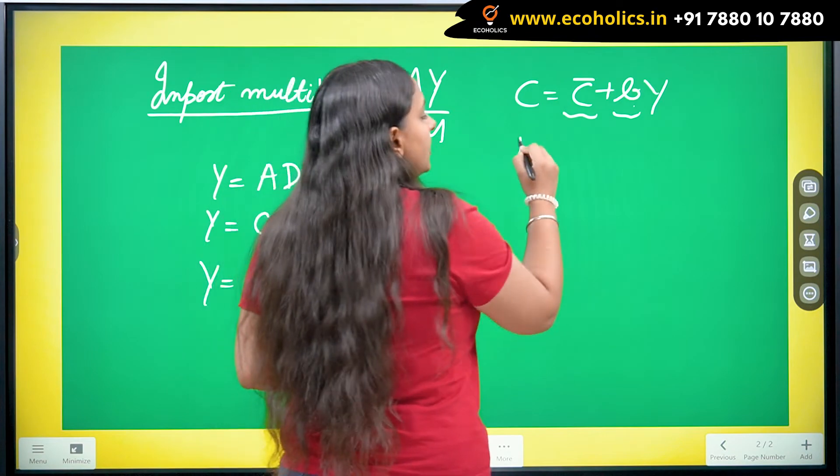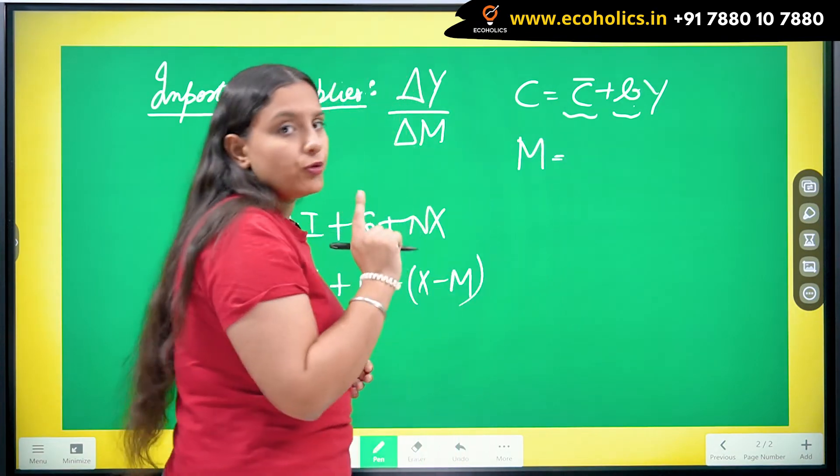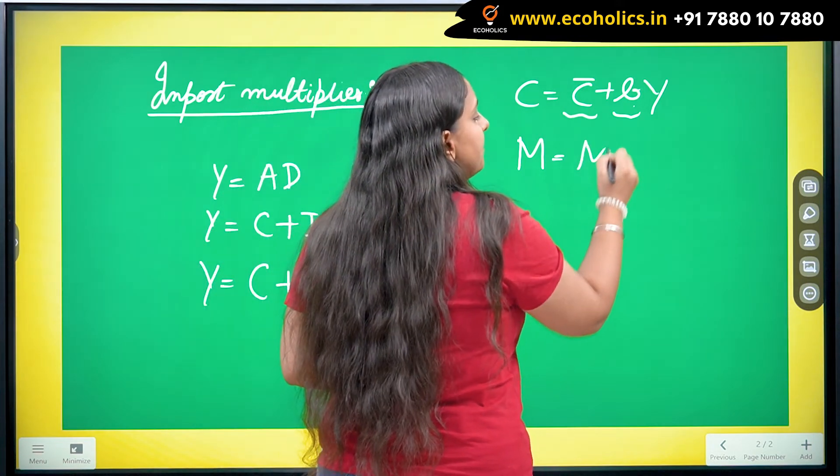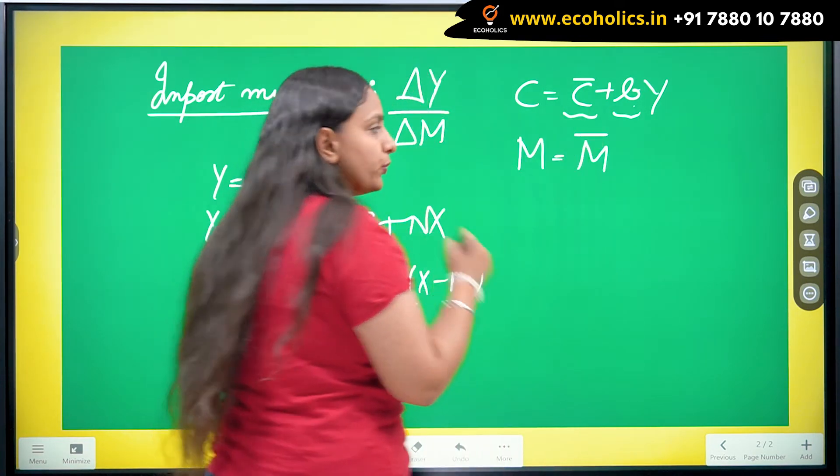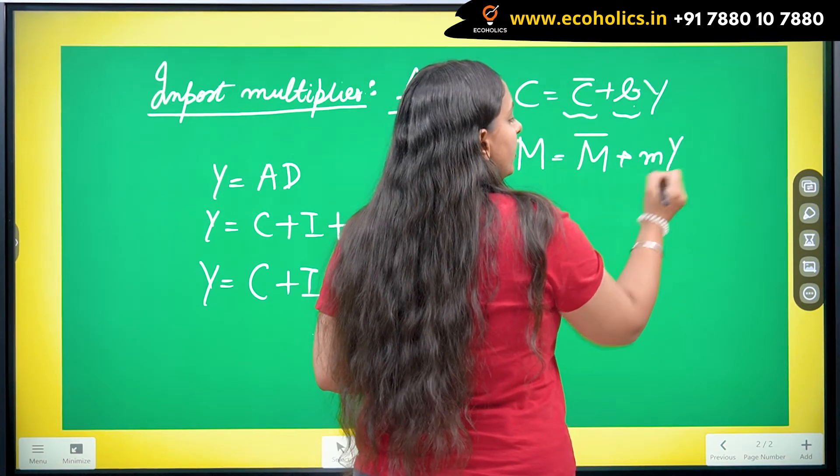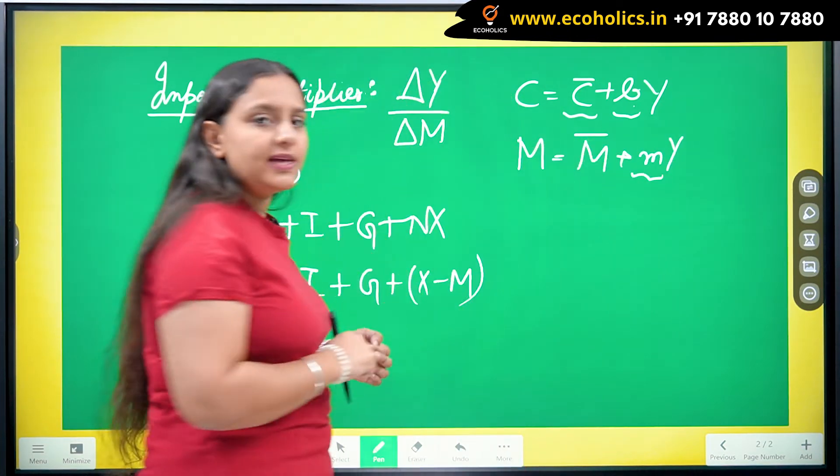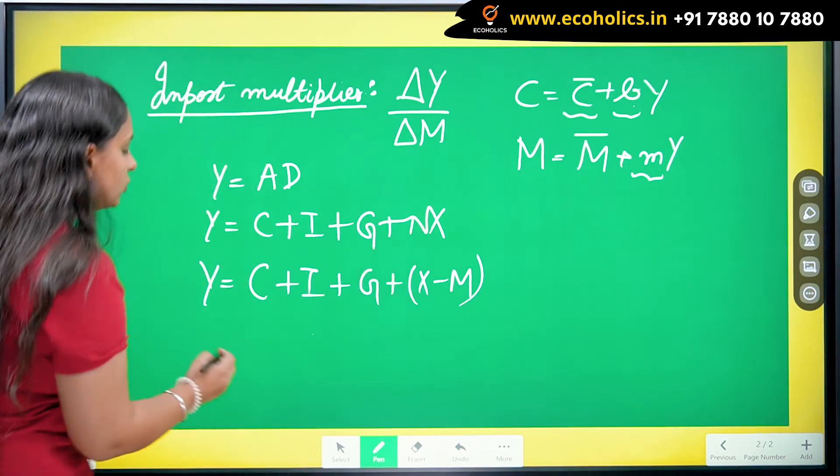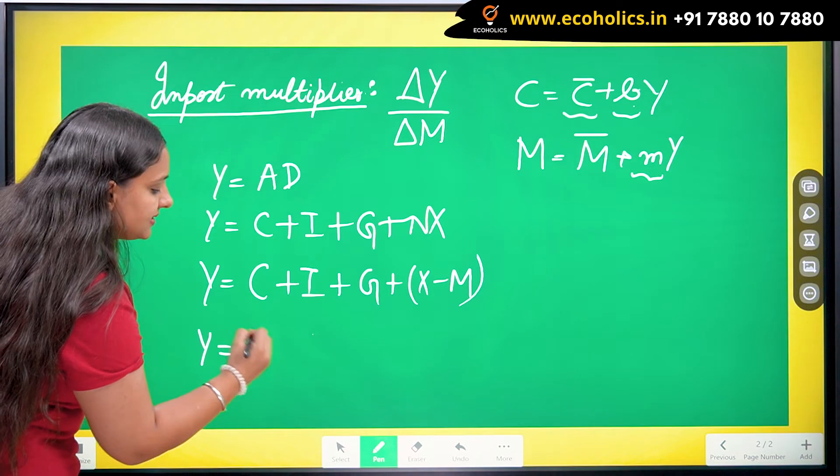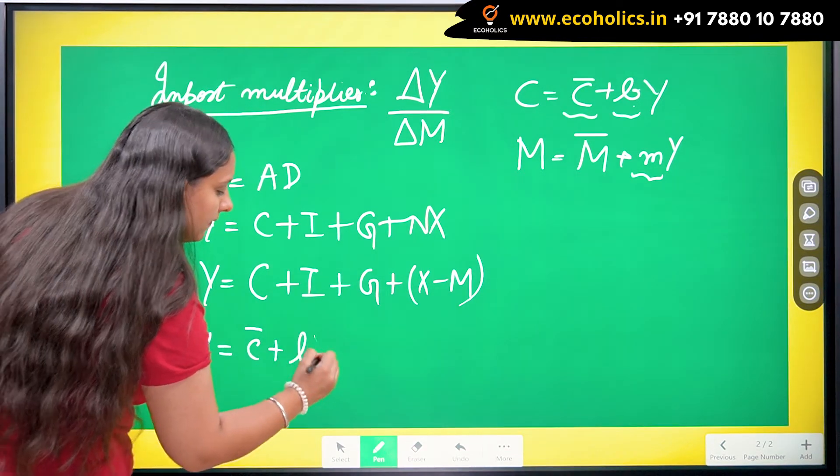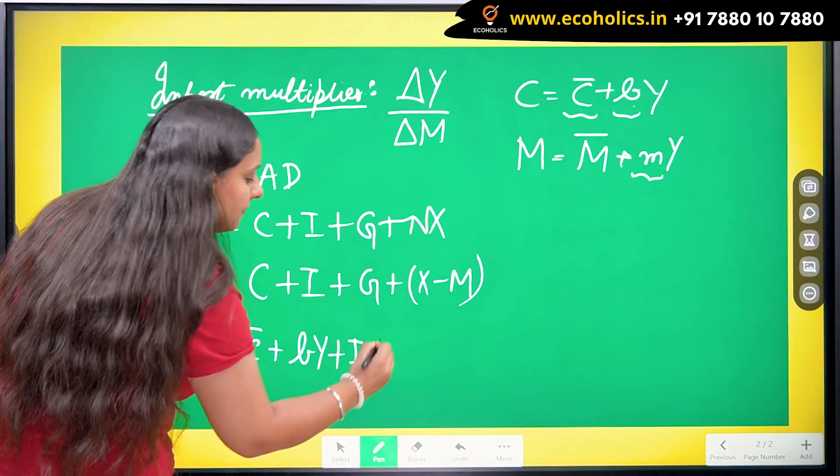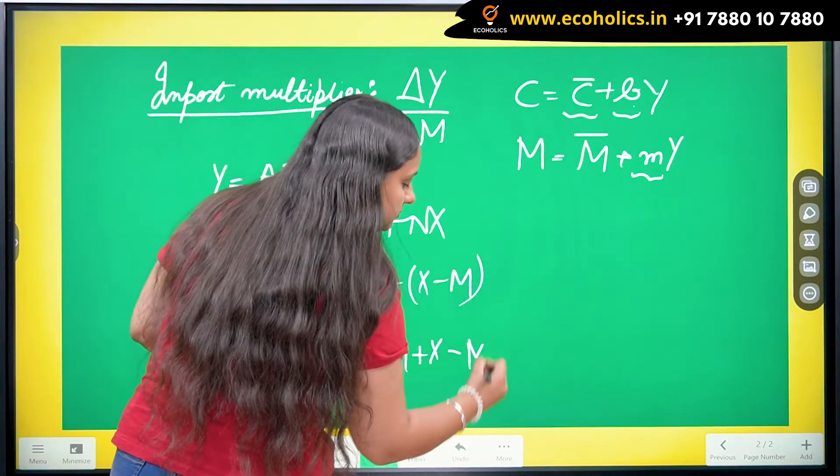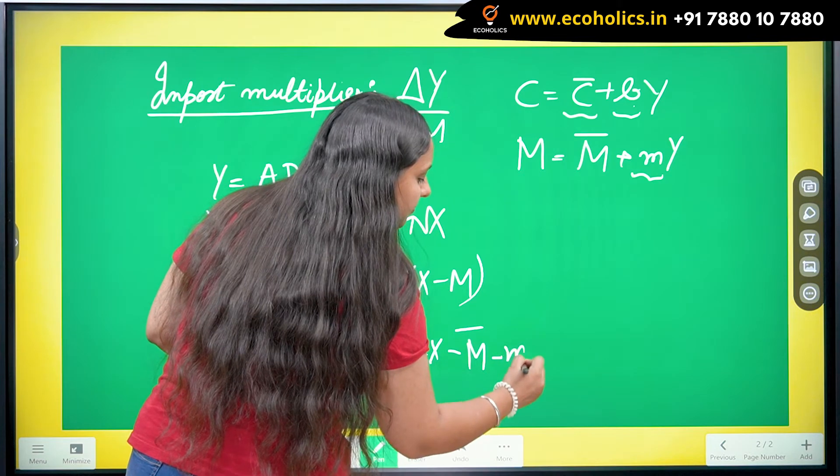But when I come to imports, I will be taking an import function. For import function, we can write M bar, which is the autonomous imports, plus small m Y, where the small m represents marginal propensity to import. I am going to substitute the values over here. So I will be getting C bar plus B Y plus I plus G plus X minus M bar minus M Y.